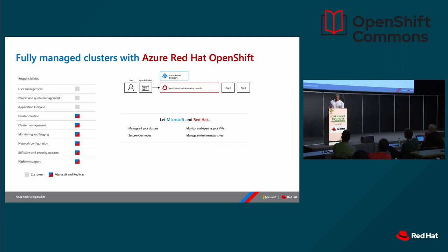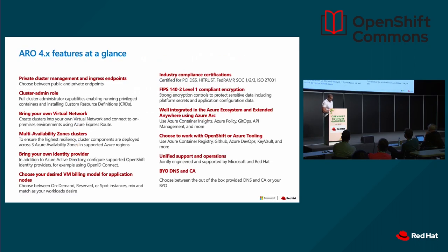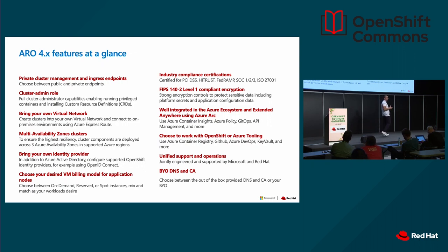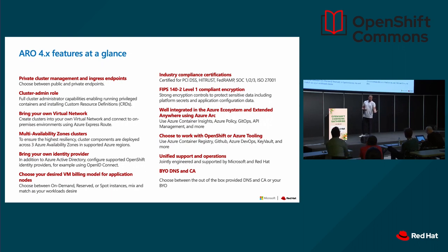I'll give you some ideas of what you can achieve today with Azure Red Hat OpenShift. On the networking side, you can choose whether you're going to have private clusters — so private control plane and private ingress for your applications — or public. You can mix and match between public and private as well. You also have full cluster admin on the cluster itself.